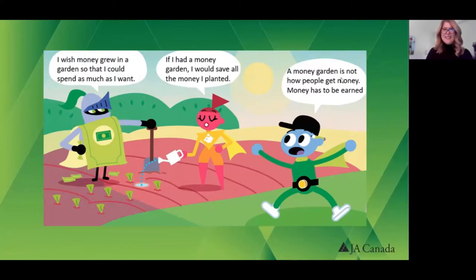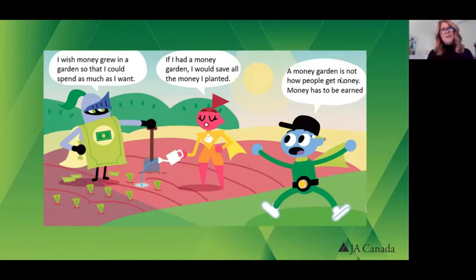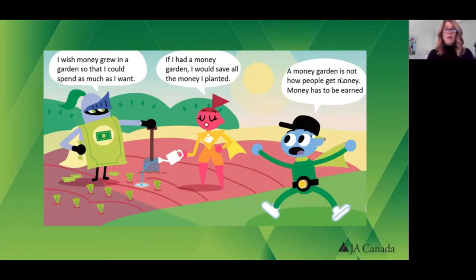So we have some interesting characters in this cartoon. Sir Spendalot is someone who — I think it's pretty obvious — he likes to spend a lot. We also have Super Saver, and this is a character that likes to save a lot. Right now it looks like she's hoping that money grows on trees, but money does grow when we take care of it and manage it, which is what this More Than Money program is going to be all about. Ernie the Earner recognizes that we have to work hard and earn our money. And because we work hard, we want to be very careful about how we earn it, how we save it, and how we spend it.